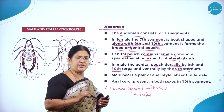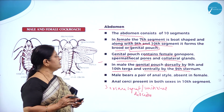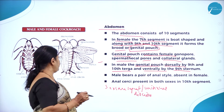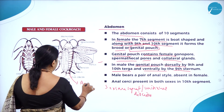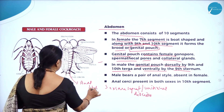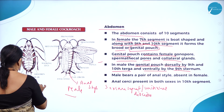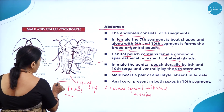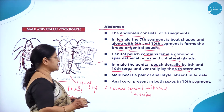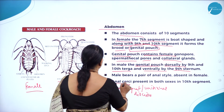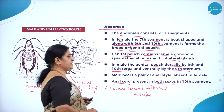The female cockroach is broader than the male cockroach. The male bears a pair of anal styles — here you can see the anal styles in the male. Anal styles are absent in females. However, anal cerci are present in both sexes in the tenth segment.